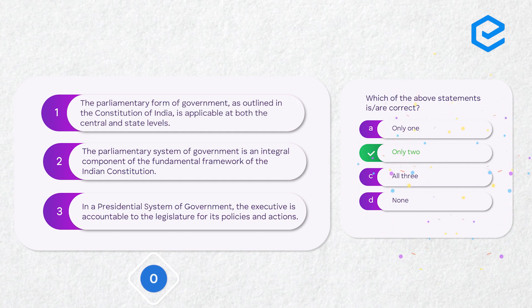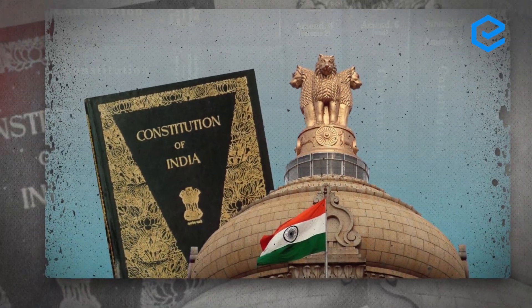The correct answer is only two. Statement three is wrong. For statements one and two, if you have studied parliamentary form of government, you would know whether it exists at both central and state levels. If you know the basics, you can easily solve the first two statements. For statement three, if you know the difference between parliamentary and presidential systems, you can identify that the executive being accountable to the legislature applies to parliamentary government — which we call 'responsible government' — not presidential.